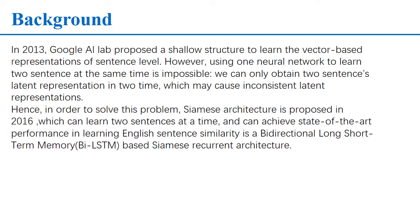Then, with the development of machine learning, using neural networks to learn latent representations of sentence-level meaning is a popular method. In 2013, Google proposed a shallow structure named word-to-vector which can represent sentence-level embeddings. However, a disadvantage is that in sentence similarity tasks, it is impossible to obtain two sentence-level embedding representations at the same time, because the traditional neural network can only have one input.